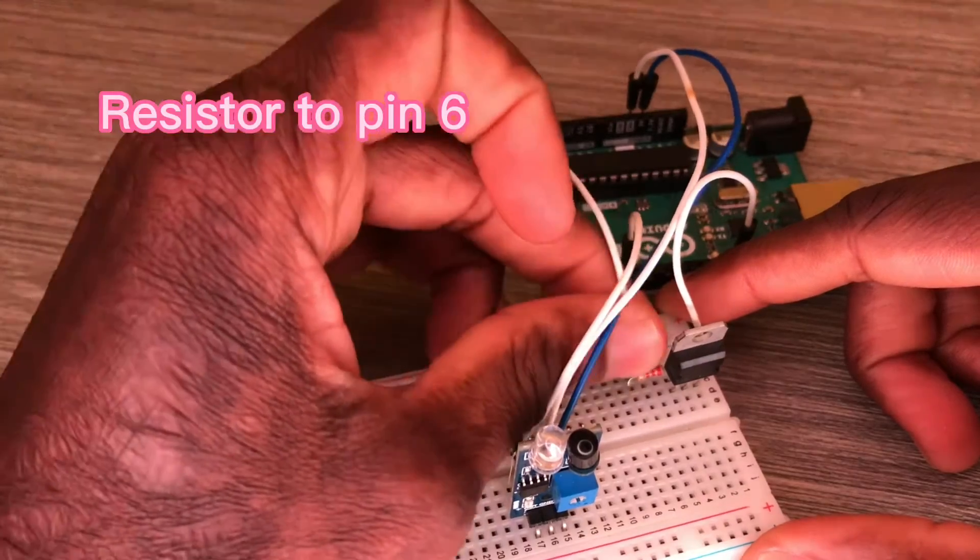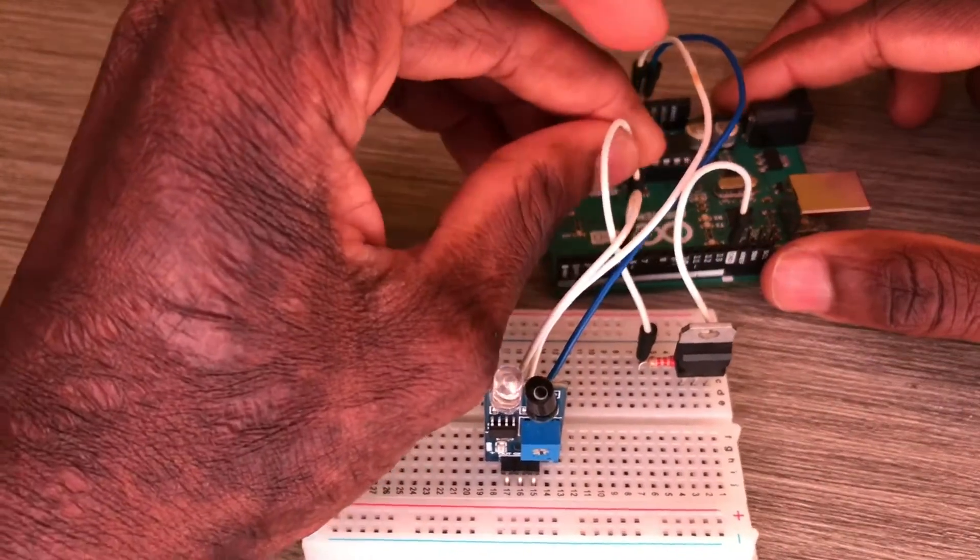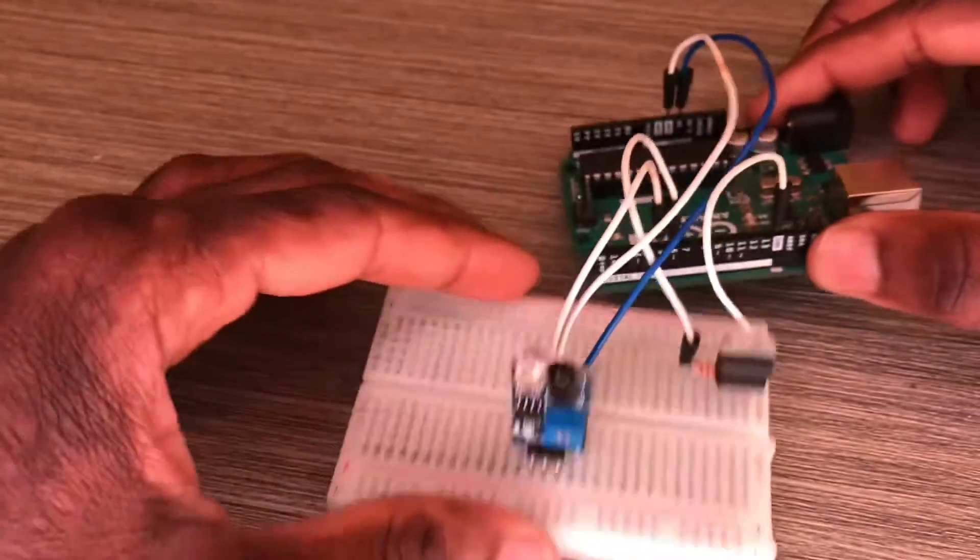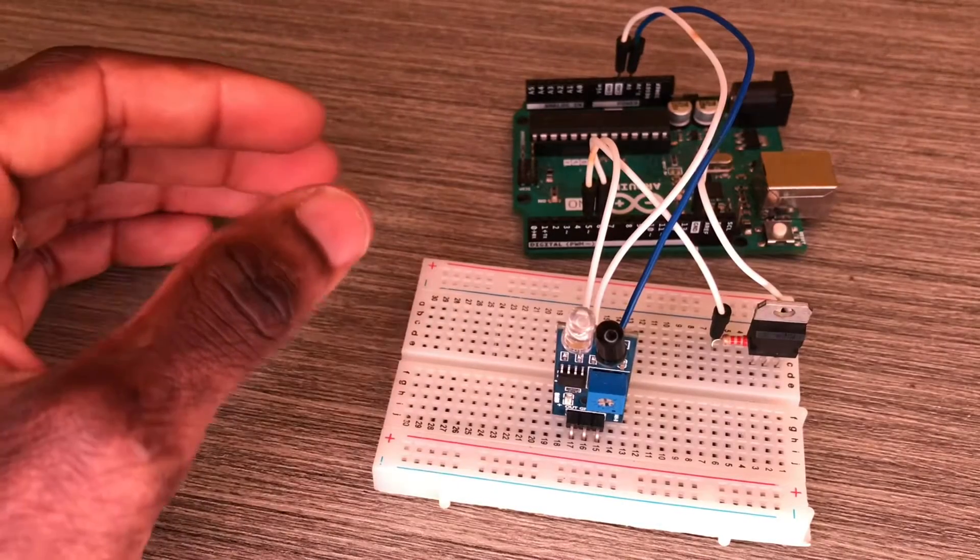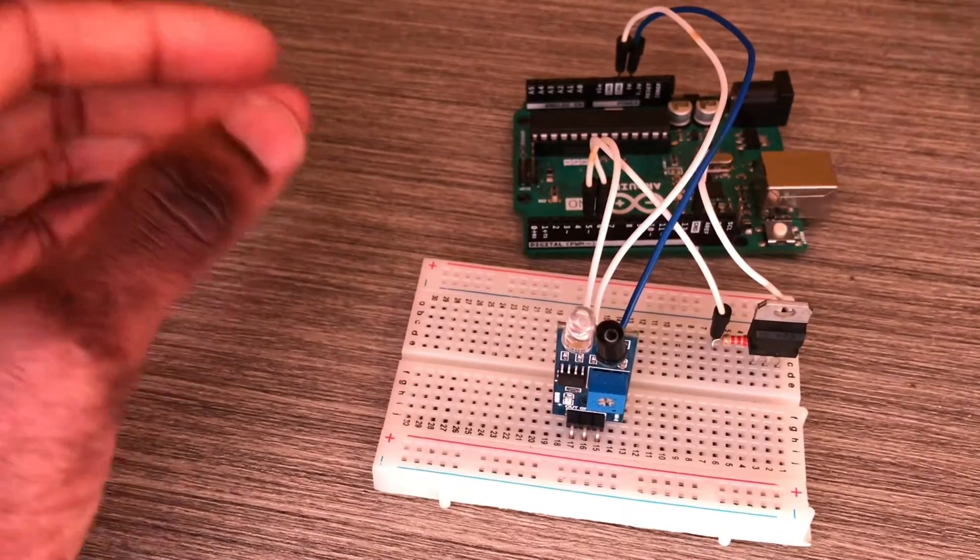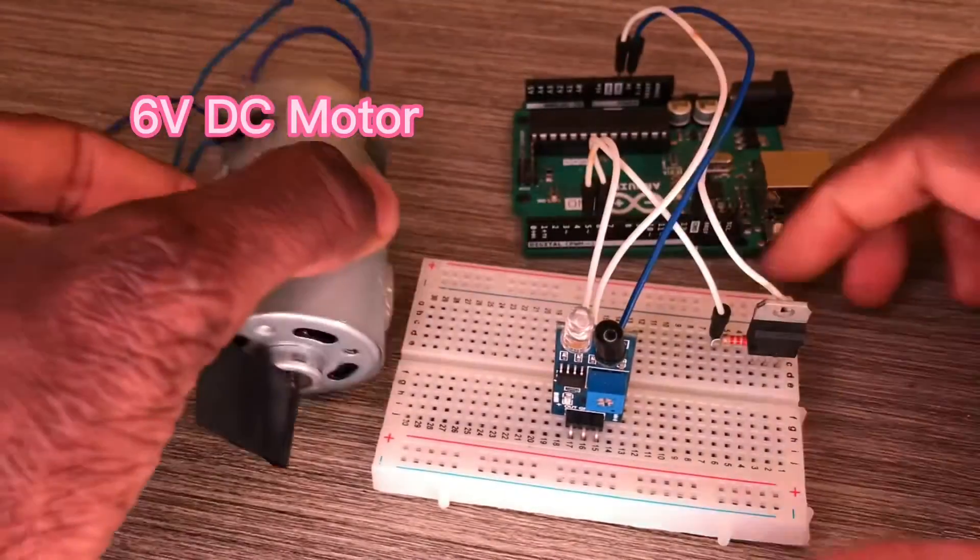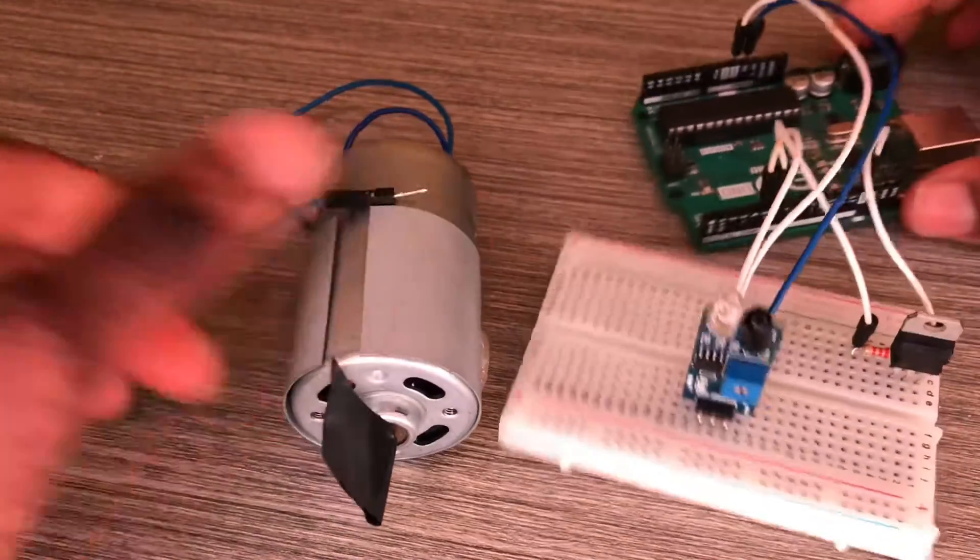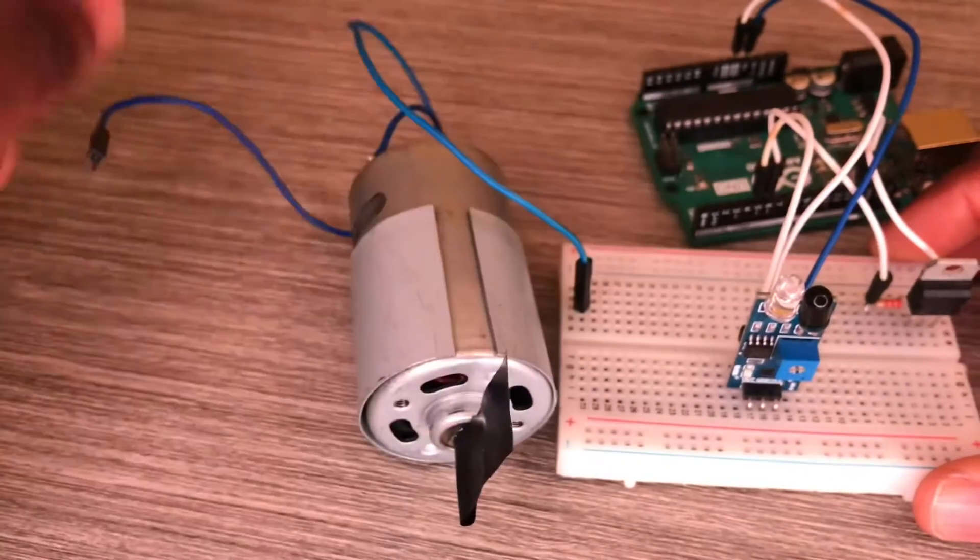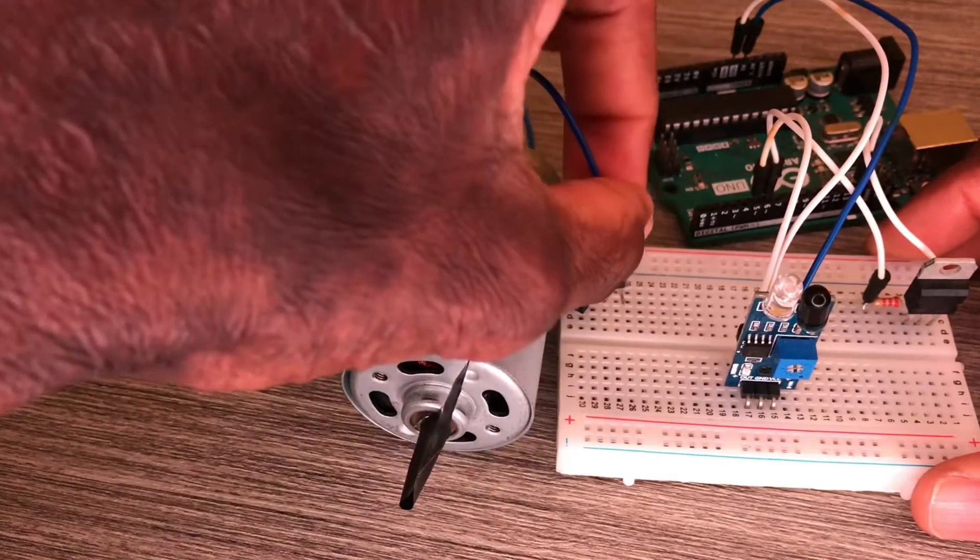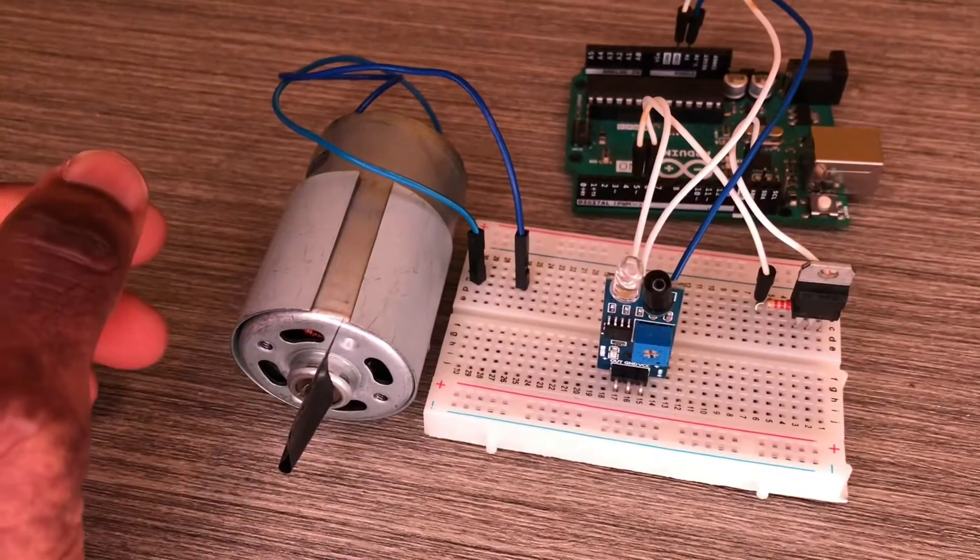The resistor goes to pin 6, PWM. Pin 6 can deliver a PWM signal to control the speed of the 6 volt DC motor. That's why I connected the base to the PWM pin.